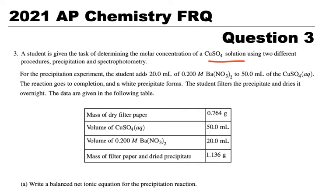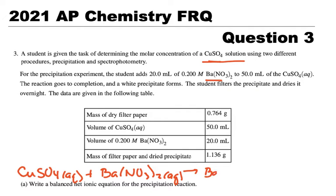So our first question here is write the balanced net ionic equation for the precipitation reaction. So we have some copper sulfate solution and we're mixing it with some barium nitrate. So let's write that down. CuSO4(aq) + Ba(NO3)2(aq). Now both of these are solutions, so we're going to say aqueous. Then if we do a double replacement, we're going to get copper with nitrate and barium with sulfate.